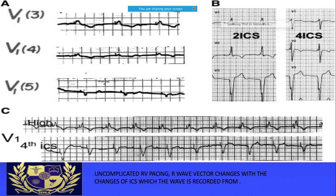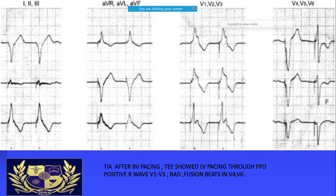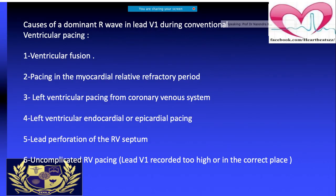Figure C shows the tall R wave recorded in V1 when placed too high, which disappears when V1 is recorded in the correct fourth intercostal space. This was the patient with dual chamber pacemaker for sick sinus syndrome who developed TIA. When the ECG was taken in VVI mode, there was dominant R wave in V1 to V3 with right axis deviation, and ventricular fusion beats in V4 to V6. A TEE was done and lead perforation was identified — the lead had passed into the LA — and it was managed accordingly.